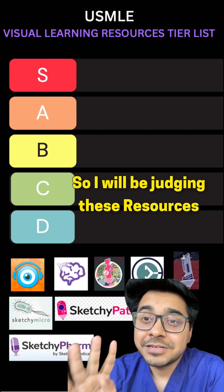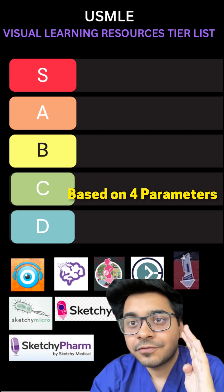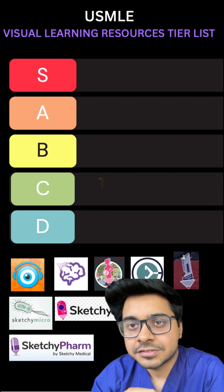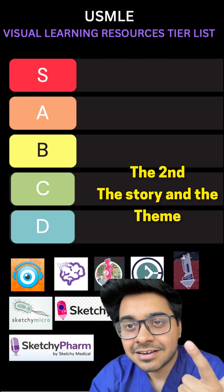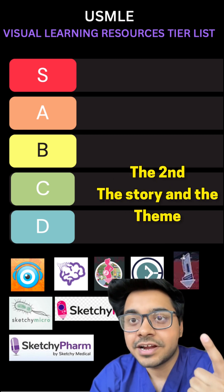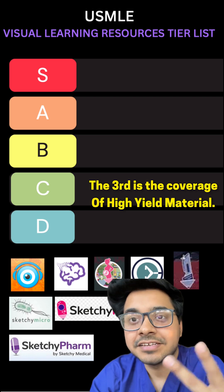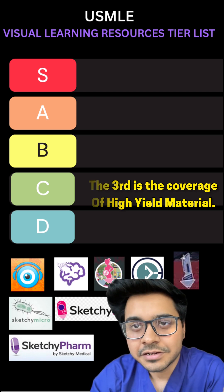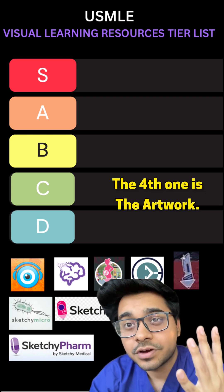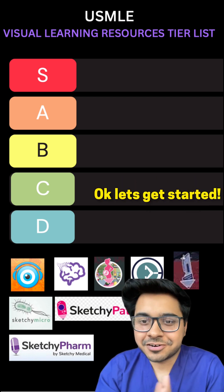I'll be judging these resources based on four parameters: the first being the symbol, the second is the story and the theme, the third is the coverage of high-yield material, and the fourth is the artwork. Let's get started.